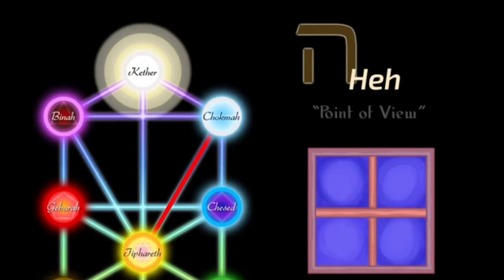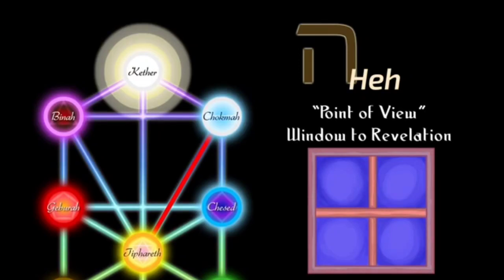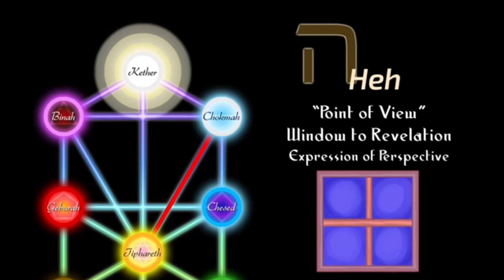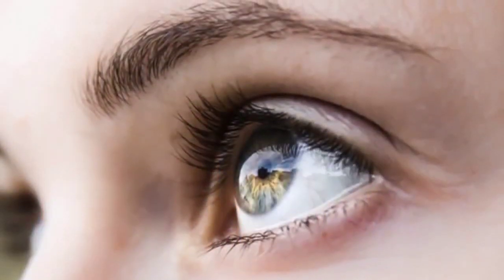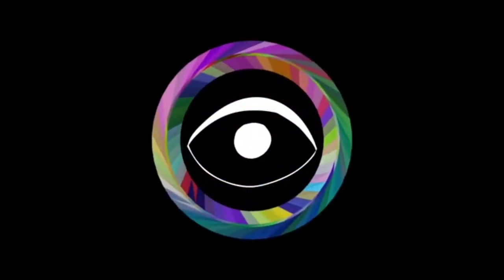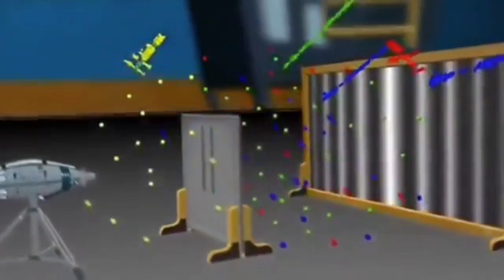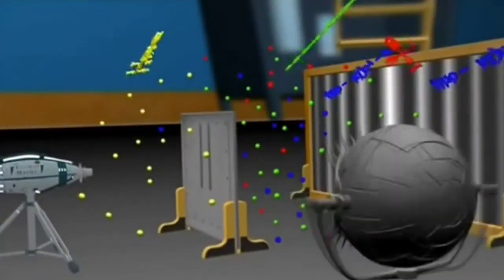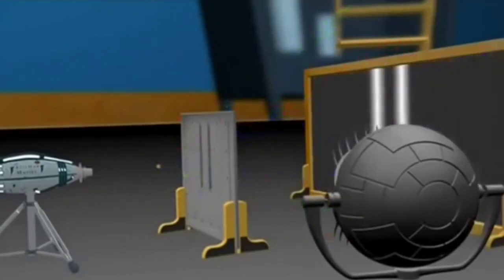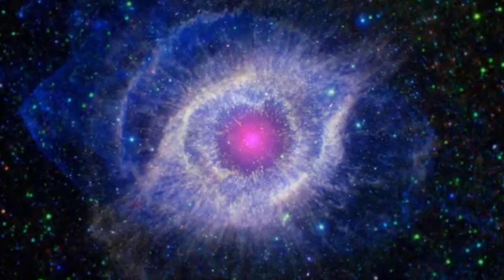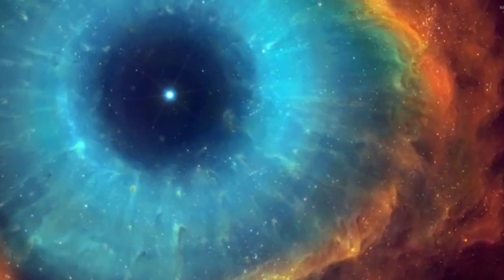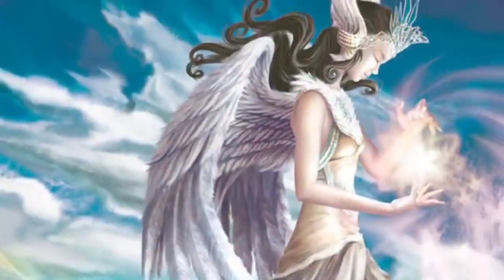The fifth path: Hei. Hei is symbolized by a window and represents a point of view — a window to divine revelation, or a perspective that has to do with the way that you express yourself. It's the concept of looking, yet not specifically looking at anything, because so far nothing is actually manifested yet in this region of the Tree of Life. This path represents the perspective of the essential observing capacity within creation. We can relate this to the quantum physics double-slit experiment, where simply observing something affects both us and the result of what becomes manifested. This letter symbolizes the effortlessness of the world and the symbol of divinity.